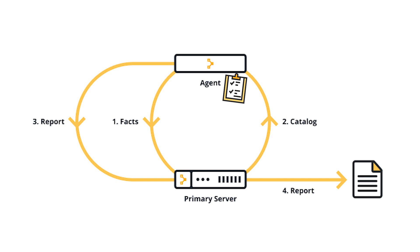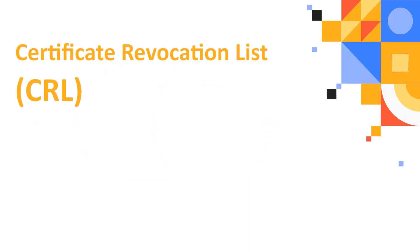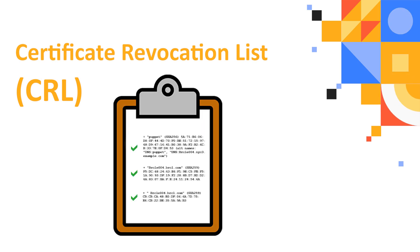That's not the end of it, though. At any time, that certificate can be revoked and placed on the CRL, or Certificate Revocation List, which is like the bouncer's list of people who have been banned from the club.